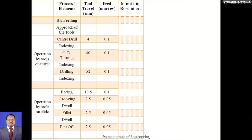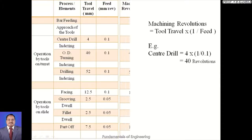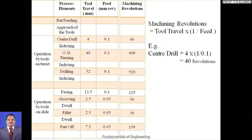Column 4 is machining revolutions, calculated using the formula: Tool Travel × (1/Feed). For example, central drill: 4 × (1/0.1) = 40 revolutions. Computed values: central drill = 40, outer diameter turning = 400, drilling = 520, facing = 125, grooving = 50, fillet = 50, parting off = 150.